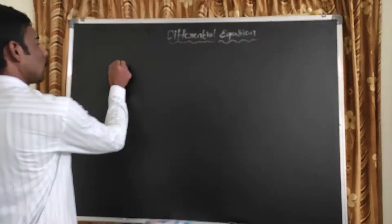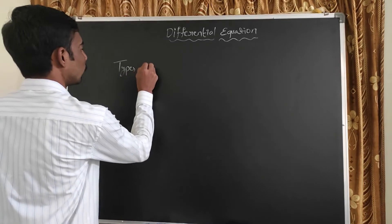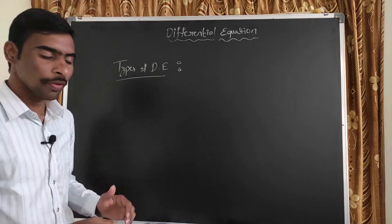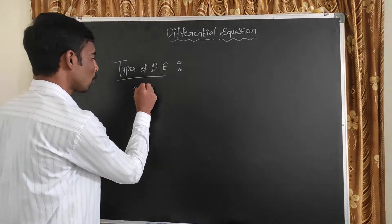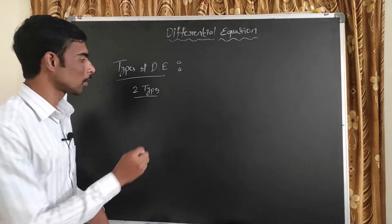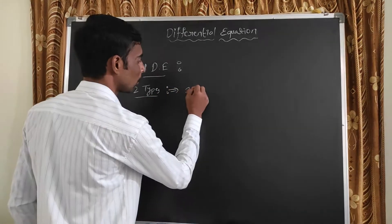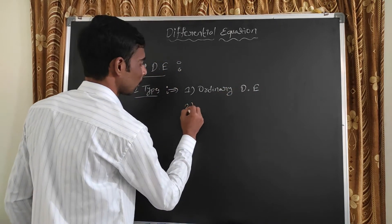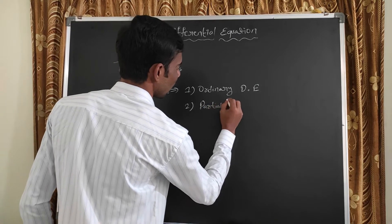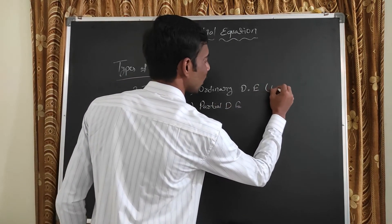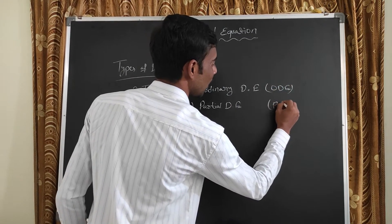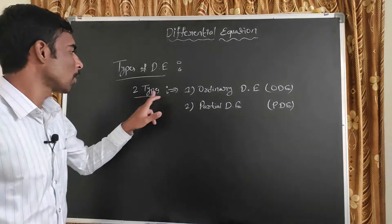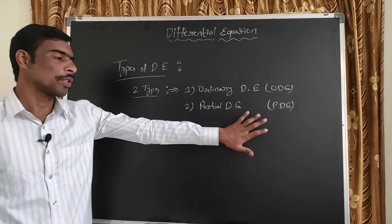Types of differential equations. Differential equations are two types. First one: ordinary differential equation. Second one: partial differential equation. Short form: ODE and PDE.